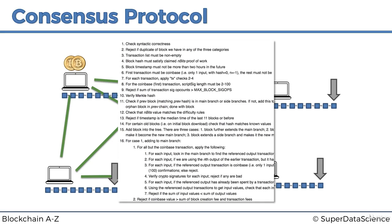That's the first part of the consensus protocol: once a block comes to you, you check it, then accept or reject it. If all nodes start rejecting a block, the blockchain rejects it entirely and that miner is penalized. That solves challenge number one.